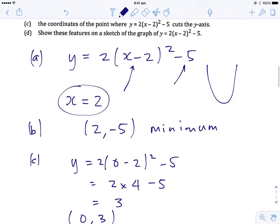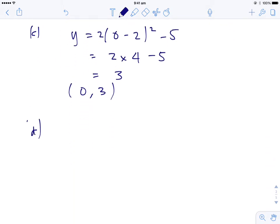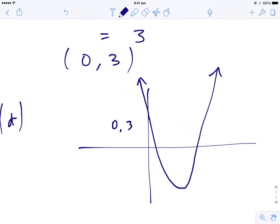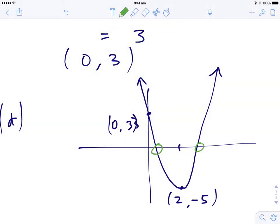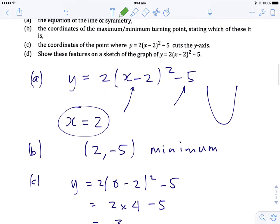And d, show these features on the sketch of that graph. So I was going to skip straight to this one here. So this is going to be a rough sketch. Across 2, down 5, and it's going through 3 up here. So there's our point there, 0, 3. That's the y-intercept. This point here is going to be 2, negative 5. Notice this question is not asking us about the x-intercepts here. So this one here is a nice graph that we can draw just from the completed square form.